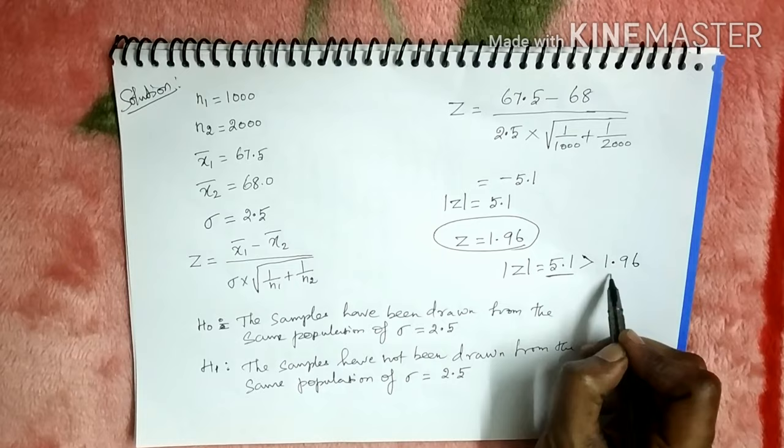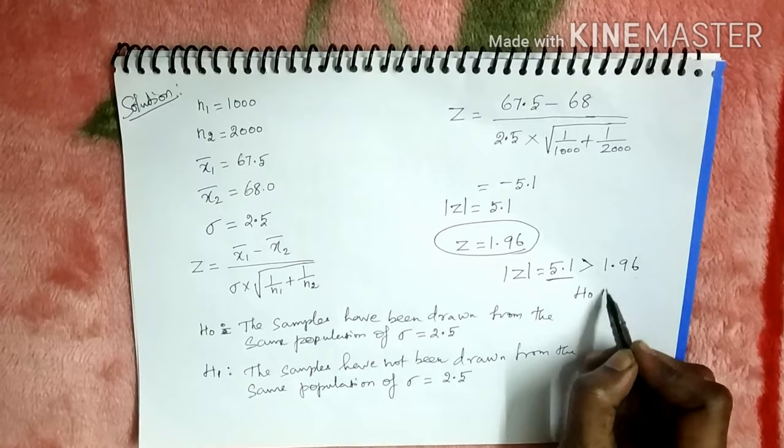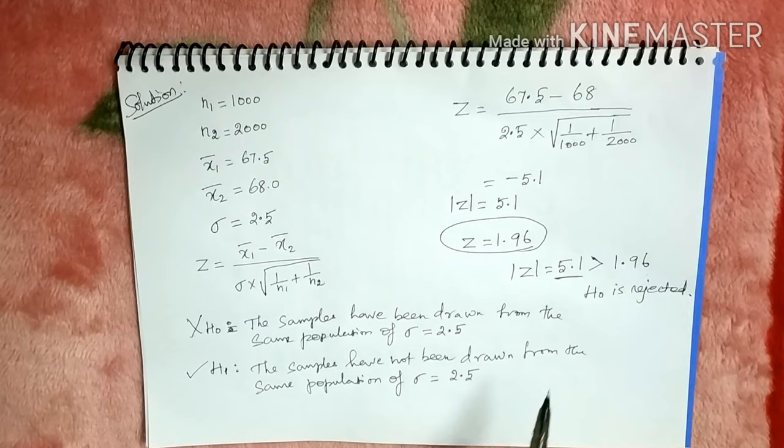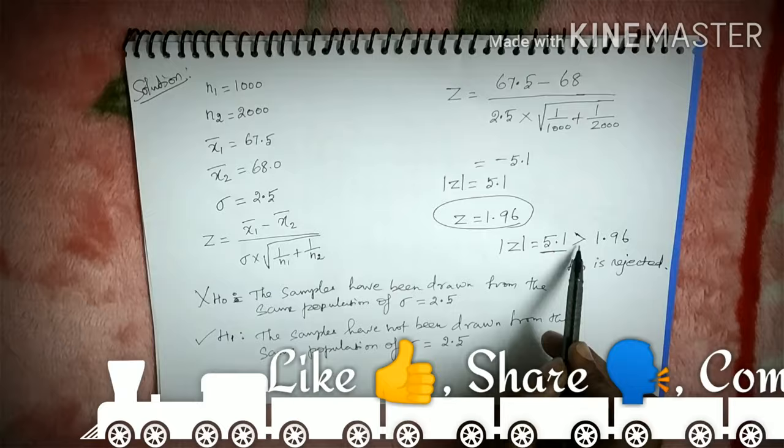Therefore, we reject the null hypothesis. The conclusion is: the samples have not been drawn from the same population, because the calculated value is greater than the table value. Thank you.